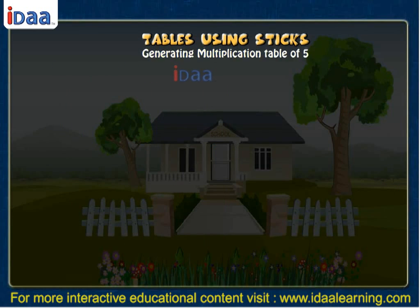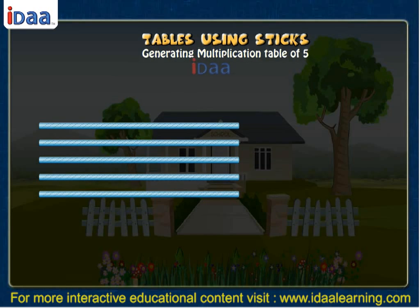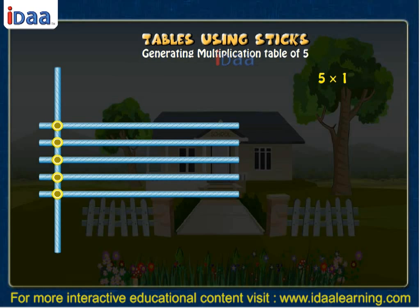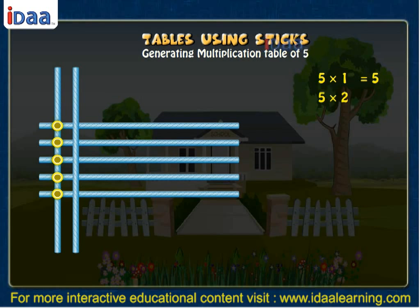If we wish to make the table of 5, we first arrange 5 sticks horizontally and then 1 stick vertically and write 5 into 1. Now we count the number of intersection points. These are 5. So 5 into 1 is equal to 5. So 5 into 2 is equal to 10.